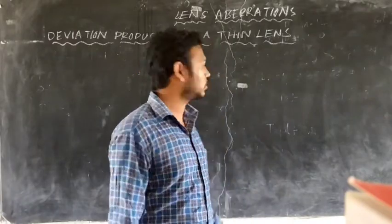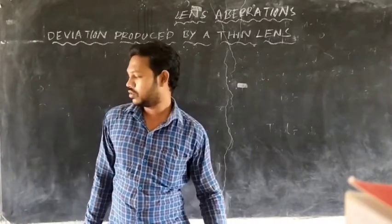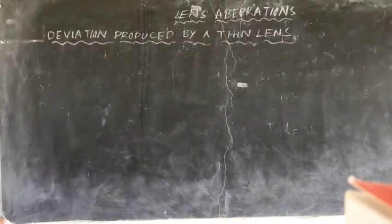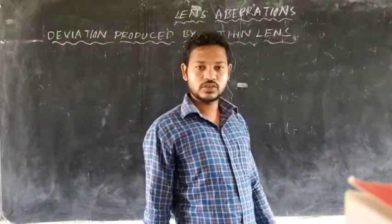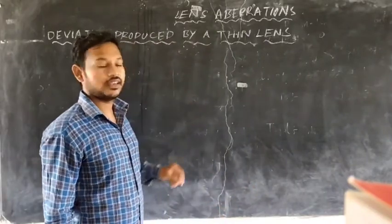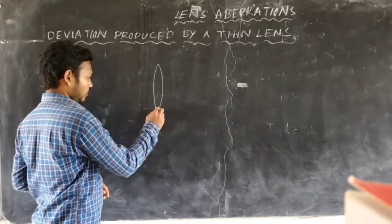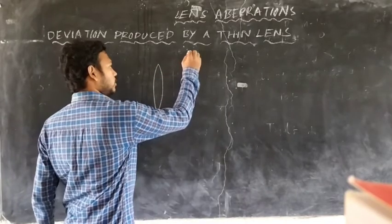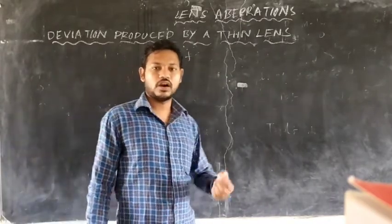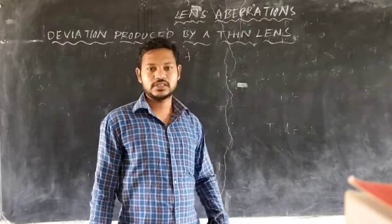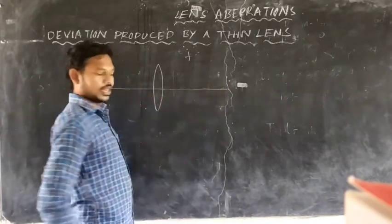First of all, we have to know what deviation is produced by a thin lens. Let us take a concave lens — the focal length of the lens is here. This is the concave lens. Let us take a point object on the principal axis of the thin lens or concave lens.